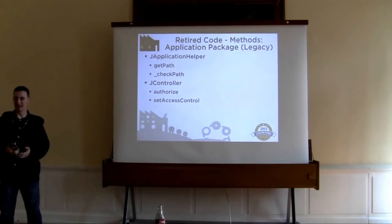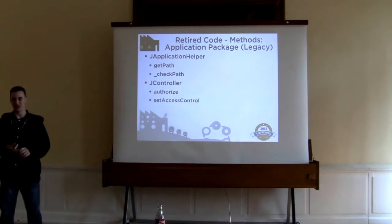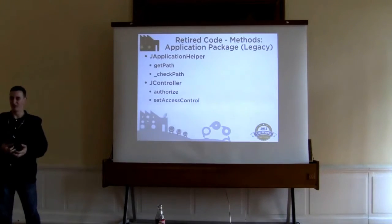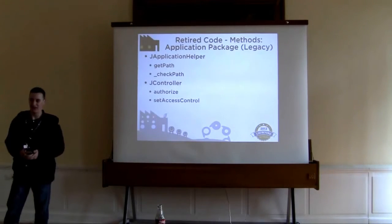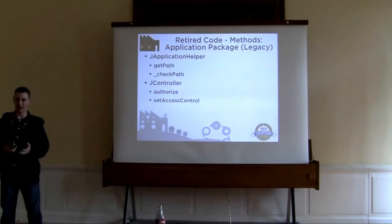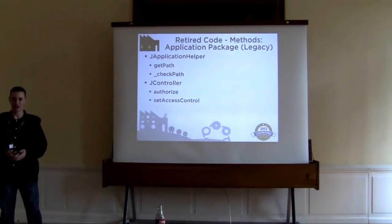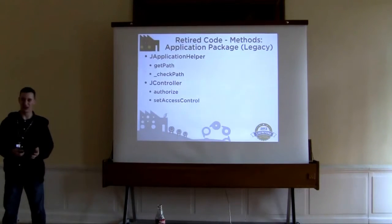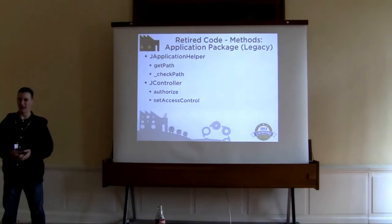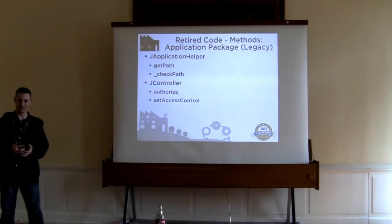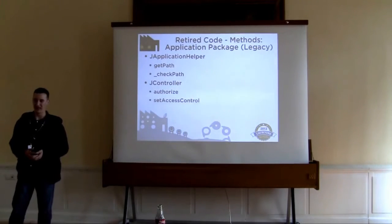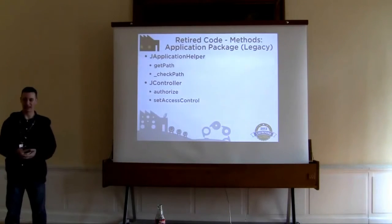In the legacy application package — referring to legacy JApplication and the legacy MVC structure — we've removed a couple of methods. In JApplicationHelper, the getPath and checkPath methods were the methods that supported loading those non-MVC admin.content.php type files. In JController, the authorize method was replaced by the authorize method with an 'S'. And setAccessControl was a legacy CMS 1.5 method for ACL, replaced by JAccess.